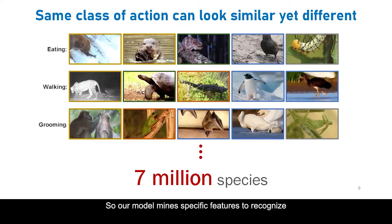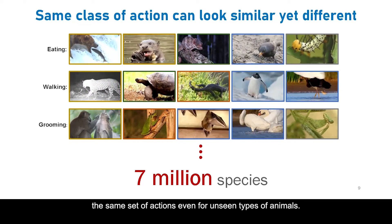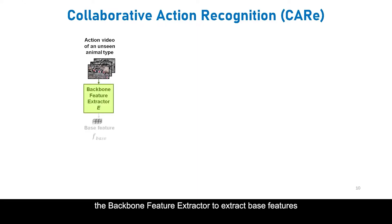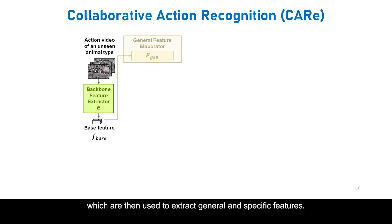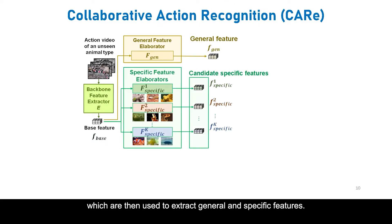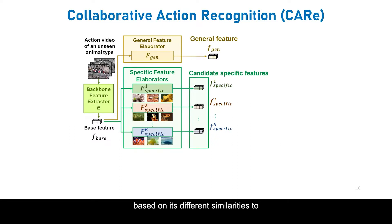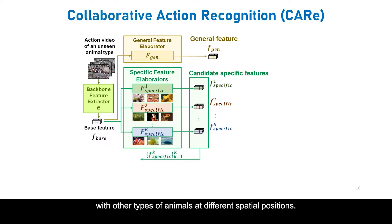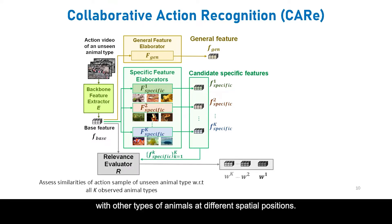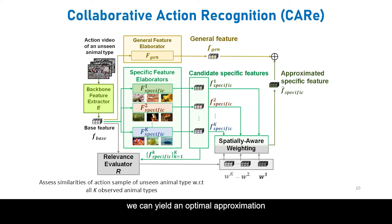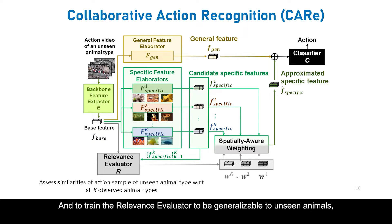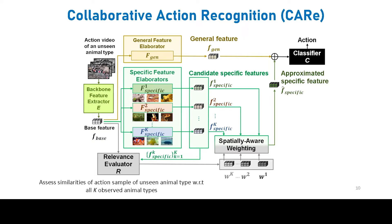Our model mines specific features to recognise the same set of actions, even for unseen types of animals. The action video of an unseen animal type is first fed into a backbone feature extractor to extract base features, which are then used to extract general and specific features. To recognise the action of an unseen animal, we approximate its specific features based on its different similarities to K observed animal types and different spatial positions on the feature maps. Having K-specific feature elaborators collaborate in a spatially aware manner, we yield an optimal approximation of its actions. To train the relevance evaluator to be generalisable to unseen animals, we adopted meta-learning by splitting our training set into meta-train and meta-test during model training.